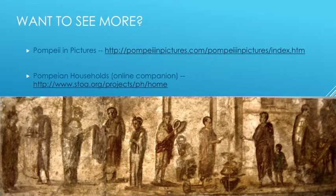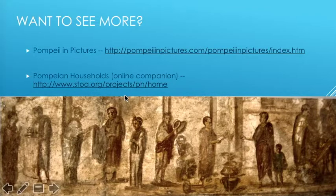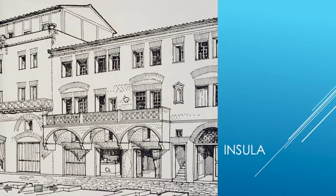If you want to see more pictures of Roman domestic architecture, I point you to two excellent sites: Pompeian Pictures and Pompeian Households, an online companion. Not every Roman could afford to live in a private townhouse. Some Romans lived in apartment housing, not too dissimilar in concept from apartment housing today. The concept of apartment housing is informed by a shortage of space, which became expensive during population booms in Rome and especially in the port city of Ostia at the mouth of the Tiber River, most notably in the second century AD.